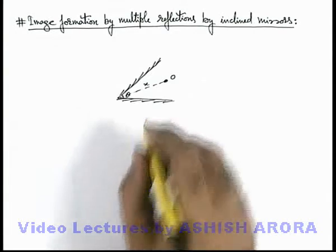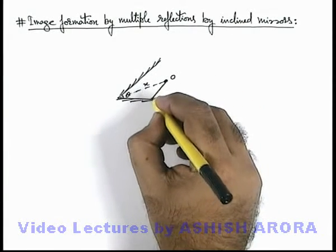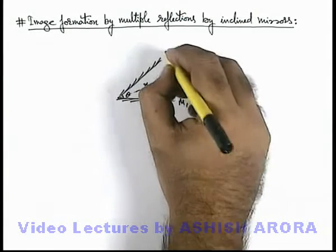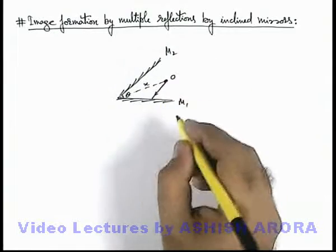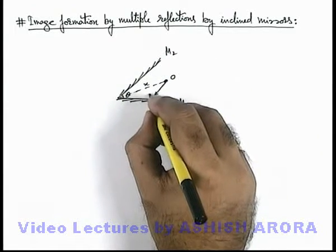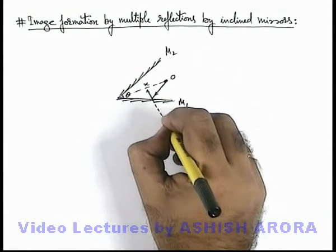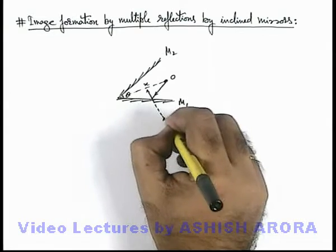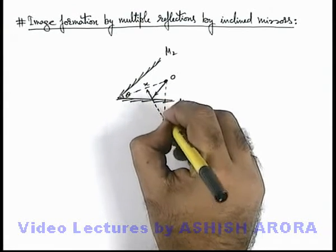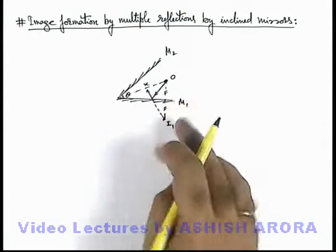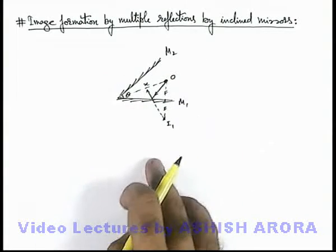For this point object, those light rays which will incident onto mirror M1 (if these mirrors are M1 and M2) are reflected in such a way that the light is coming from the image I1, which is formed at the same distance behind the mirror M1 at which the object is situated.